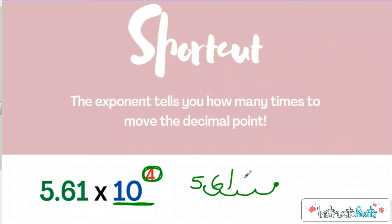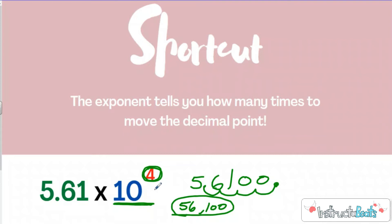I need to move the decimal place to the right four times: one, two, three, four. I'm going to move my decimal place right here, and when I rewrite that I'm going to get 56,100. There's really no point in writing this number in standard form — it doesn't save you any time. But this is just an example so you can understand the shortcut. This shortcut makes scientific notation really quick and easy, but we always want to remember why: 10 to the fourth power is really 10,000.